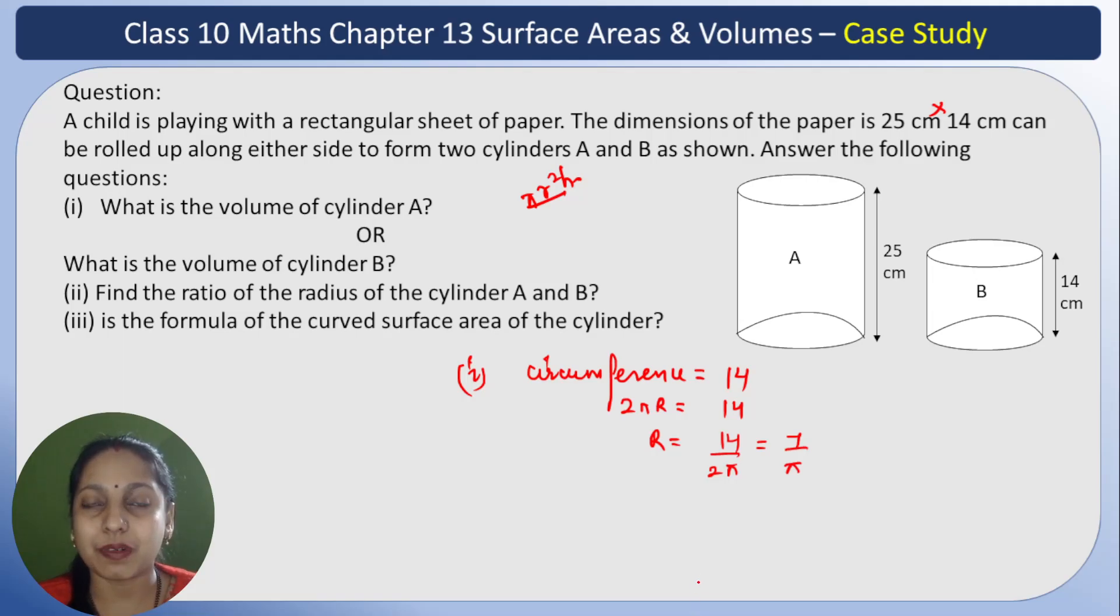Now I am going to find the volume. The volume formula is πR²H. So π times R which is 7 upon π, times 7 upon π, times H which is 25. This π gets cancelled. So now I have to get 49 times 25 upon π. If I keep the value of π, how much will it be?